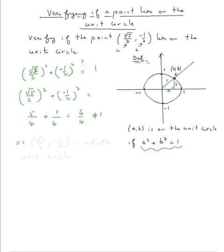Therefore, the point square root five over two, negative one half is not on the unit circle.